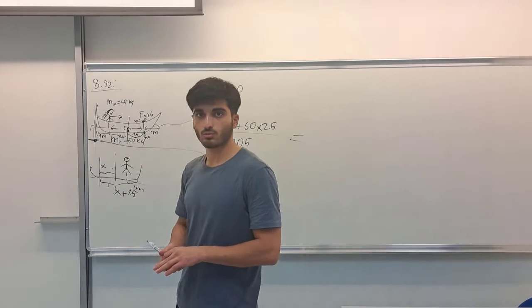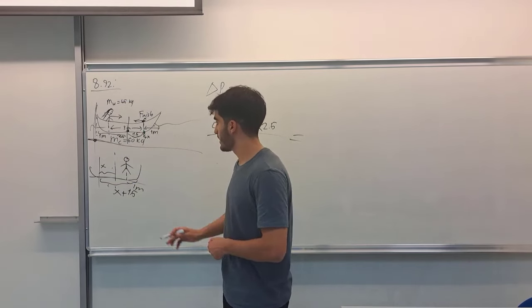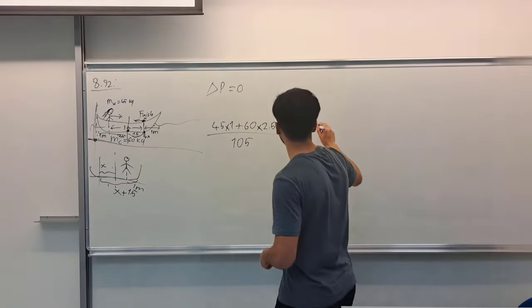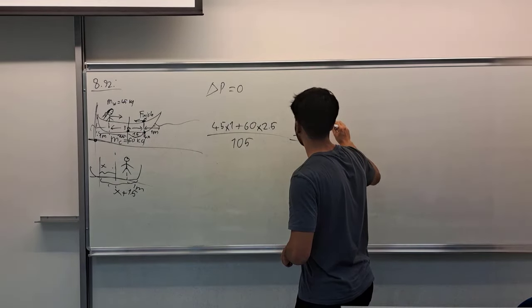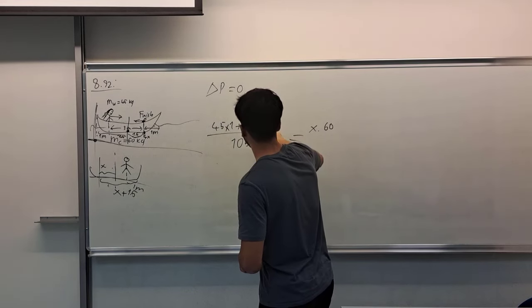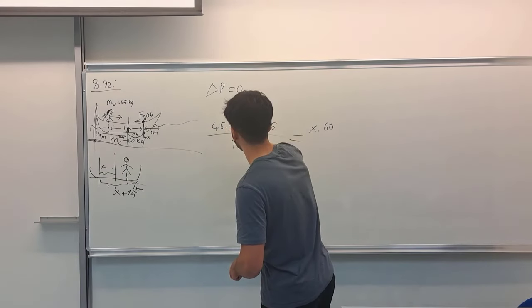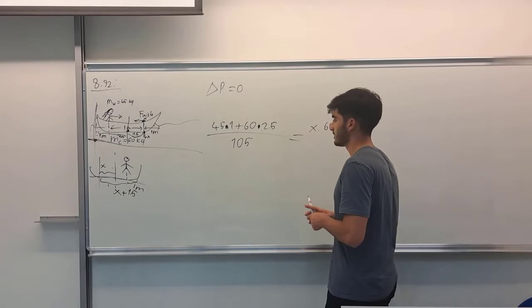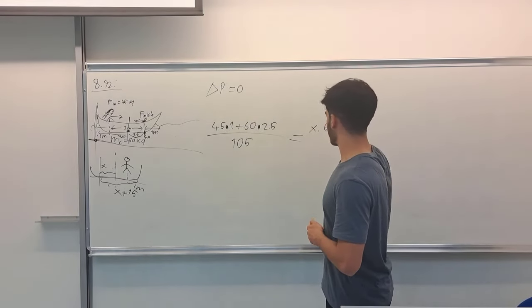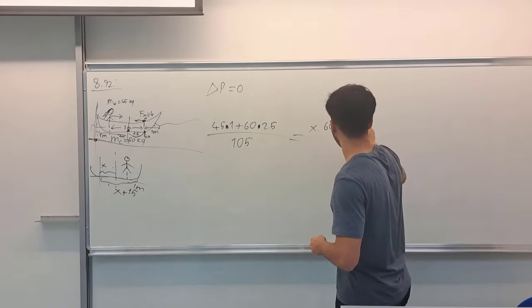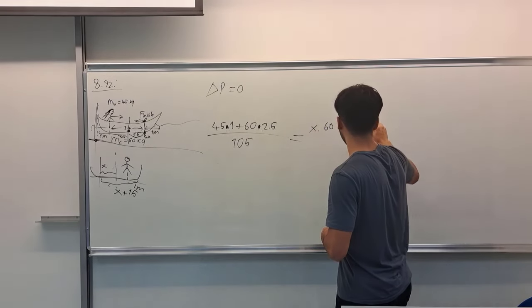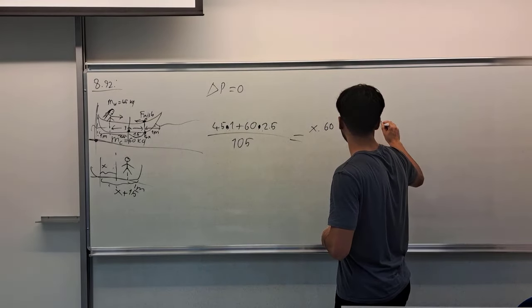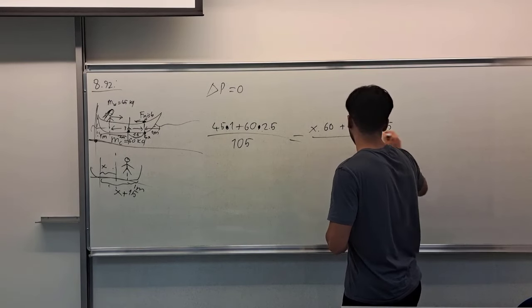So I can calculate the new center of mass of this system as x times the canoe's mass. Actually, this is not an axis, so I can show you by multiplication symbol. So x times 60 plus x plus 1.5 times 45 over total mass 105.